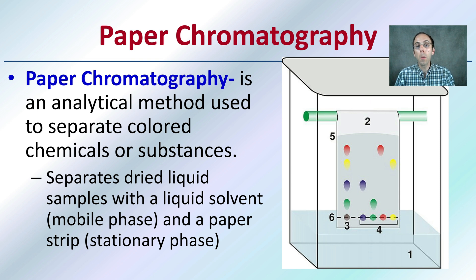This is an analytical method used to separate colored chemicals and substances. It separates dried liquid samples with a liquid solvent as the mobile phase and a paper strip as the stationary phase. You can see an example of that here—the beakers, and even just regular markers and water, for example.